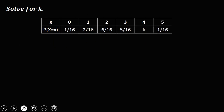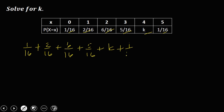Then for this given, add all the probabilities and equate to 1. So: 1 over 16, plus 2 over 16, plus 6 over 16, plus 5 over 16, plus K, plus K, plus 1 over 16, equals 1. Combining like terms — since they have the same denominator, add the numerators: 1 plus 2 plus 6 is 9, plus 5 is 14, plus 1 is 15. So 15 over 16, plus K, plus K equals 1.